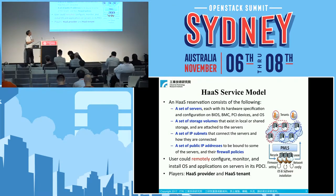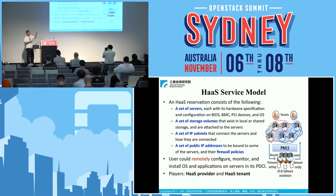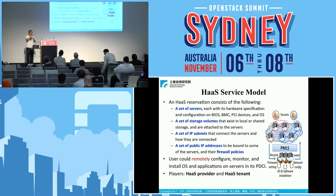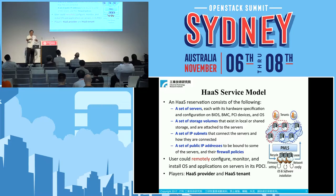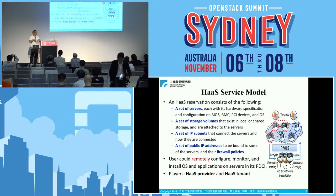The HaaS service model allows a user to submit a reservation request consisting of a set of servers, each with its own hardware specification — CPU, memory, BIOS, BMC, PCI device, and OS configuration. You also specify storage volumes, IP subnets, public IP addresses, and firewall policies. Critically, the user is remote from the physical data center and must be able to remotely acquire, monitor, install an operating system, and configure applications on those servers. There is a HaaS provider and a HaaS tenant.